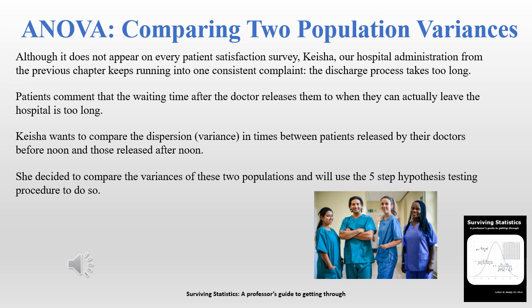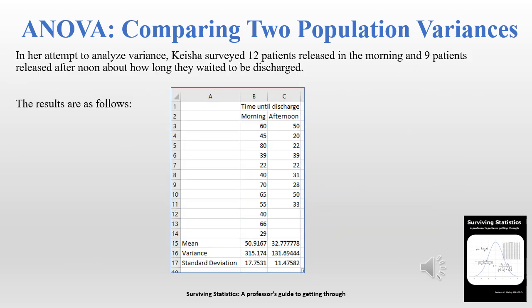She's going to use the five-step hypothesis testing procedure using the ANOVA and the F statistic. Keisha went a little out of order and conducted a survey first — she surveyed 12 patients released in the morning and 9 patients released after lunch, asking how long they waited to be discharged. The results show a mean of 50.91 minutes in the morning and 32 minutes in the afternoon, along with variance and standard deviation.